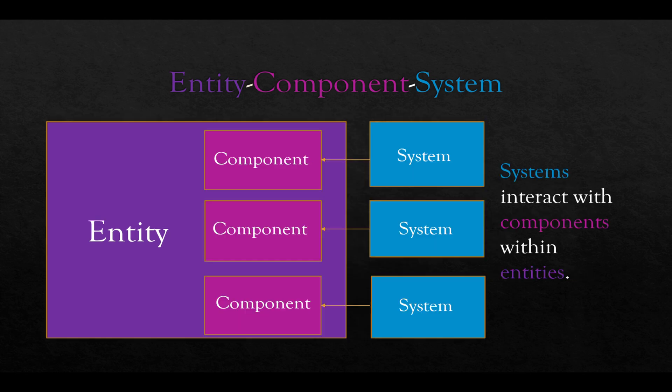Systems, the third concept in this trifecta, interact with components within entities. Entities contain components, and systems interact with components matching themselves. How does a system know which component to talk to?